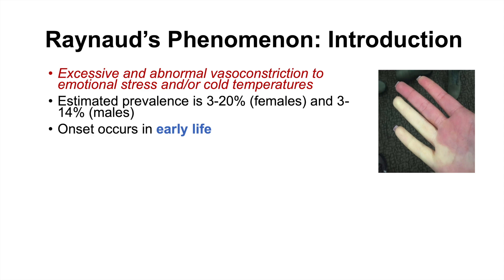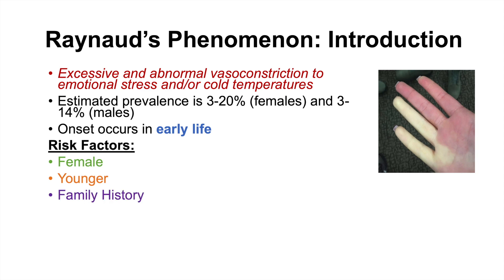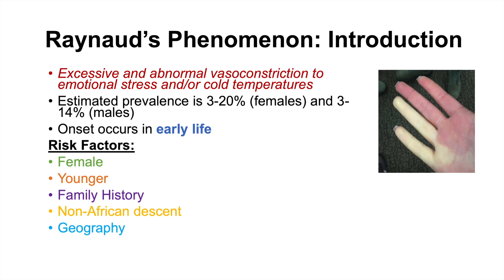When Raynaud's does occur, it has an onset that occurs early in life. Risk factors include being female, which has a higher likelihood compared to males. Being younger is also a risk factor. A family history increases likelihood as well. Non-African descent individuals seem to be at higher risk, as individuals of African descent have estimated prevalences on the lower end, around 3%. Geography is an influencing factor — individuals in colder climates have more frequent presentations. Risk factors also include associated conditions, which we'll discuss shortly.